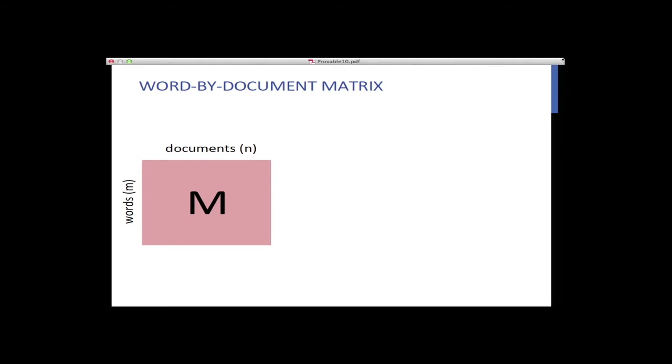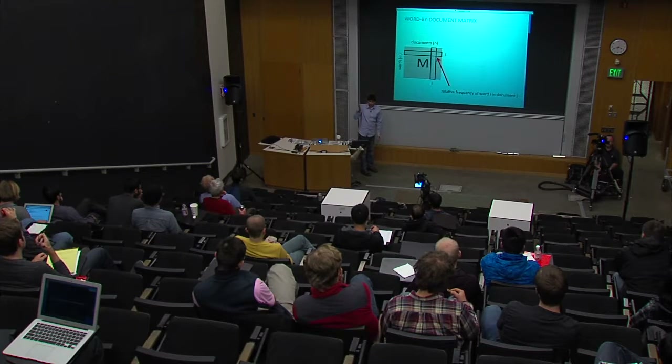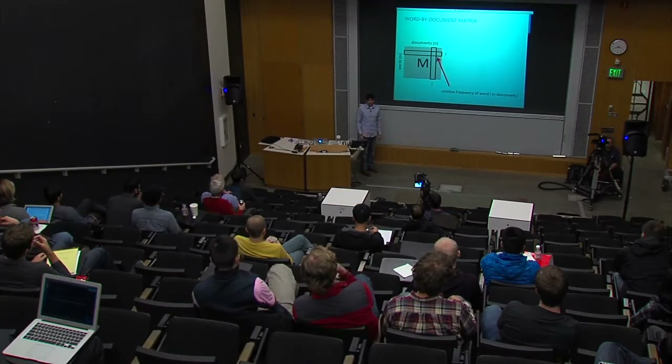Given a massive collection of articles, the first step is to create a large, sparse word-by-document matrix. Every row represents a different word and every column represents a different document. The entry in row i, column j is the relative frequency of word i in document j, normalized so columns sum to one — each document is described by a distribution on words.